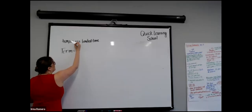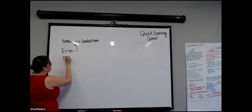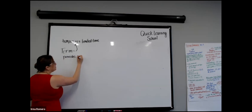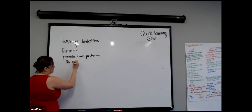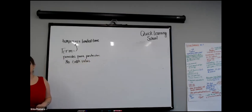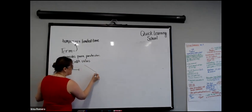The product we offer for temporary coverage is called term. Term is temporary — all you're doing is buying time. It provides pure protection. The reason we say pure protection is because there's no cash value — all you're buying is protection. There are three different types of term: level term, decreasing term, and increasing term, though we'll focus on level and decreasing.